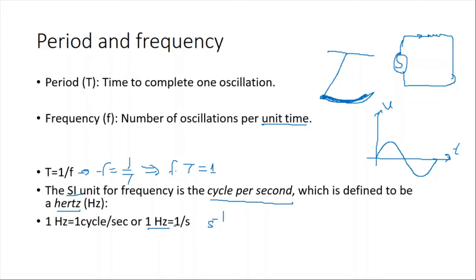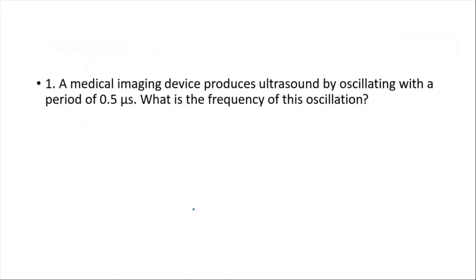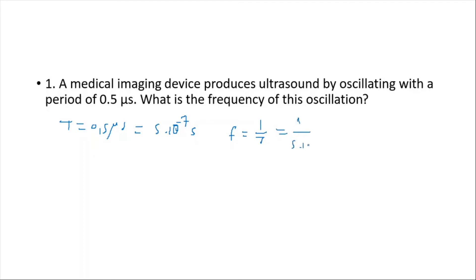Let's solve an example. A medical imaging device produces ultrasound by oscillating with a period of 0.5 microseconds. So T = 0.5 microseconds = 5 × 10⁻⁷ seconds. The frequency is f = 1/T = 1 / (5 × 10⁻⁷), which gives us 2 × 10⁶ Hz.